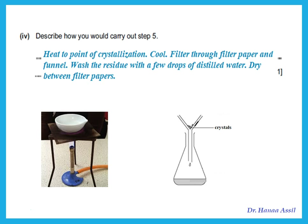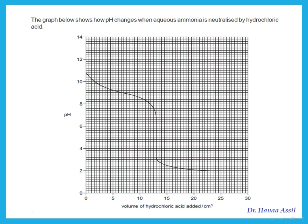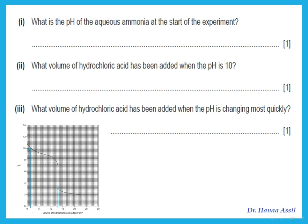The graph shows how pH changes when aqueous ammonia is neutralized by hydrochloric acid. Ammonia is in the flask and hydrochloric acid is added from a burette. The starting pH of aqueous ammonia from the graph is 10.8. When the pH is 10, the volume of hydrochloric acid added is 1.5 cm³. The volume at which pH is changing most quickly — the steepest part of the curve — is at 13.0 cm³.